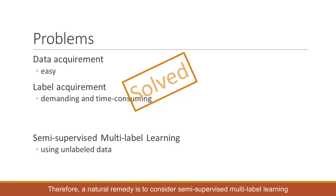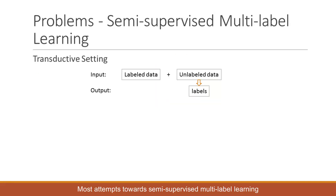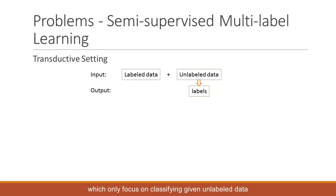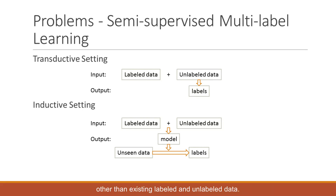Therefore, a natural remedy is to consider semi-supervised multi-label learning, which makes use of readily available unlabeled data to help build the predictive model. Most attempts towards semi-supervised multi-label learning work under the transductive setting, which only focuses on classifying given unlabeled data and thus cannot generalize to unseen instances. In many cases, it is more desirable to endure learning systems with the inductive ability of making predictions on uncertain instances other than existing labeled and unlabeled data.